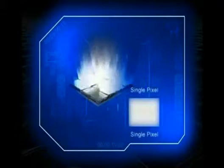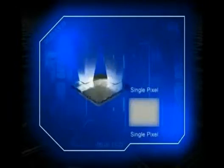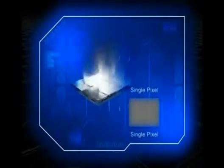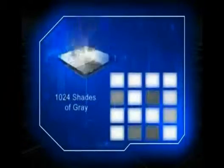When a mirror is switched on more than off, it reflects a light gray pixel, and when a mirror is switched off more than on, it reflects a dark gray pixel. In this way, the DMD mirrors can reflect up to 1024 shades of gray to create a highly detailed grayscale image.